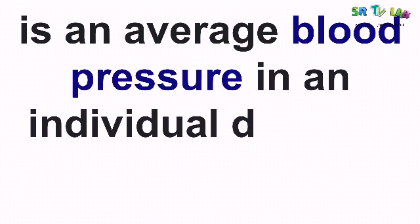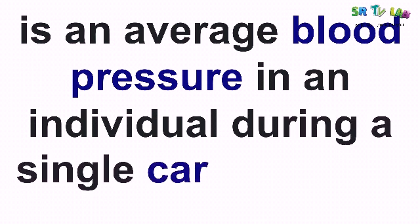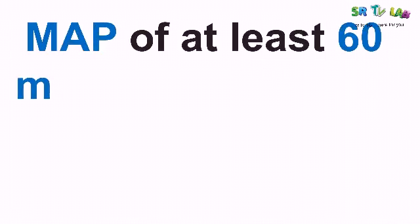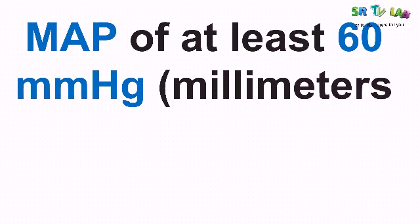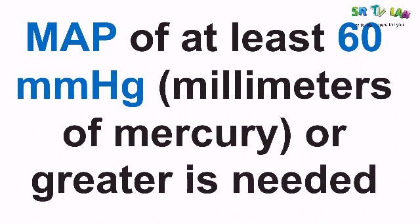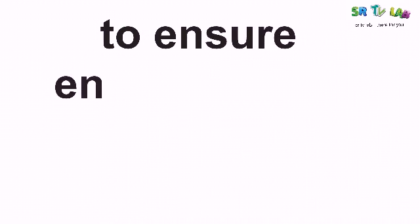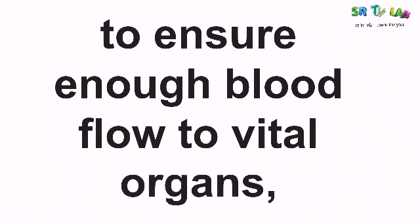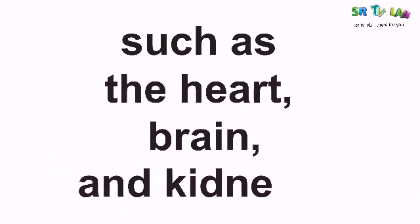Mean arterial pressure is an average blood pressure in an individual during a single cardiac cycle. A mean arterial pressure of at least 60 mmHg, or greater, is needed to ensure enough blood flow to vital organs such as the heart, brain, and kidneys.